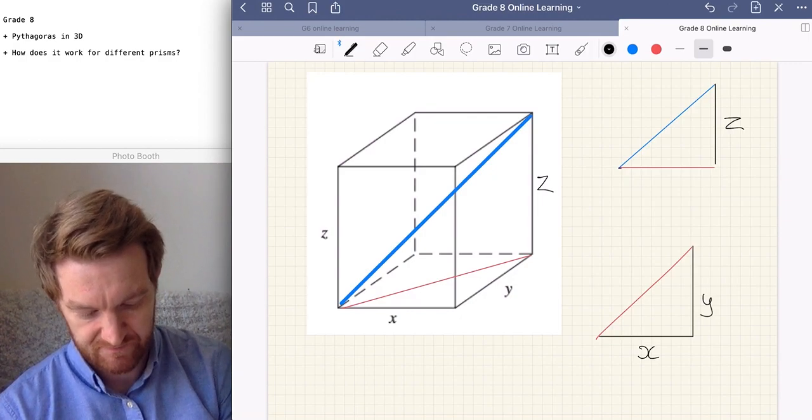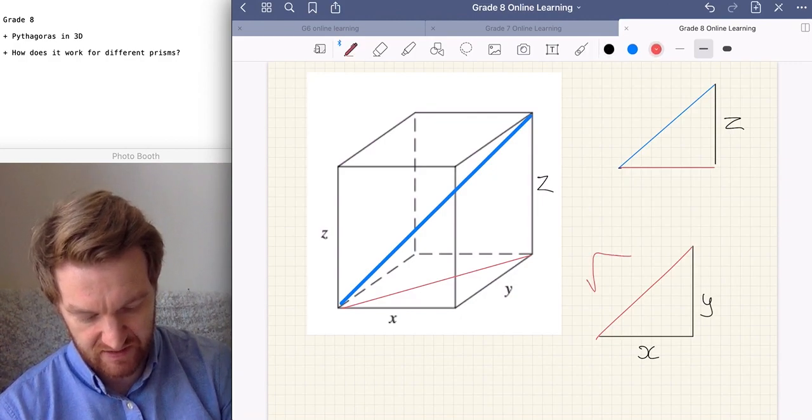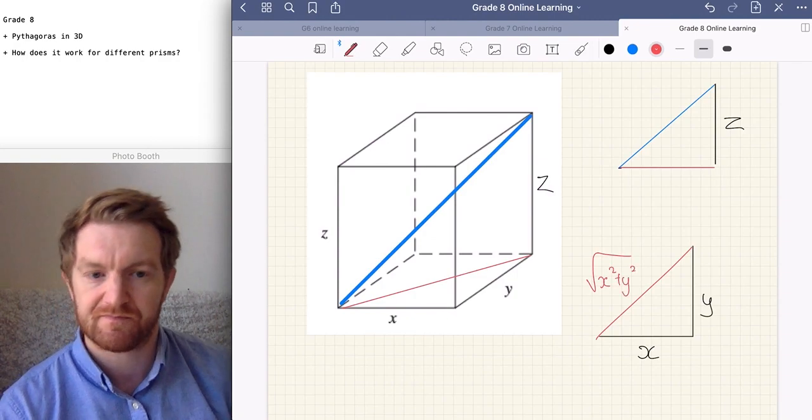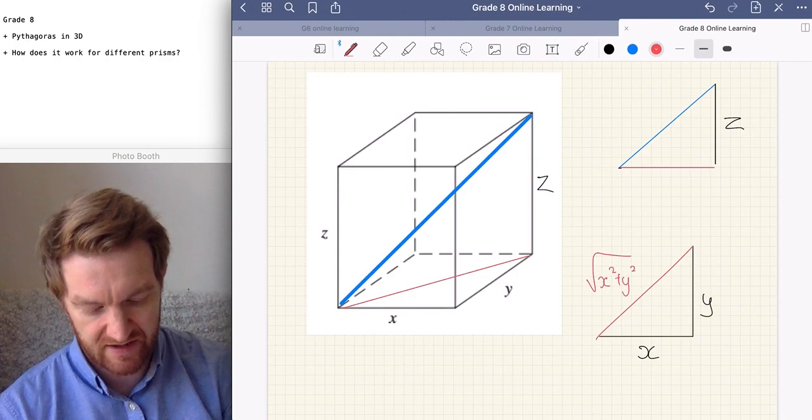Start off with the one at the bottom. We've got X, we've got Y. To find that red line, it's going to be the square root of X squared and Y squared. Carry that forwards.